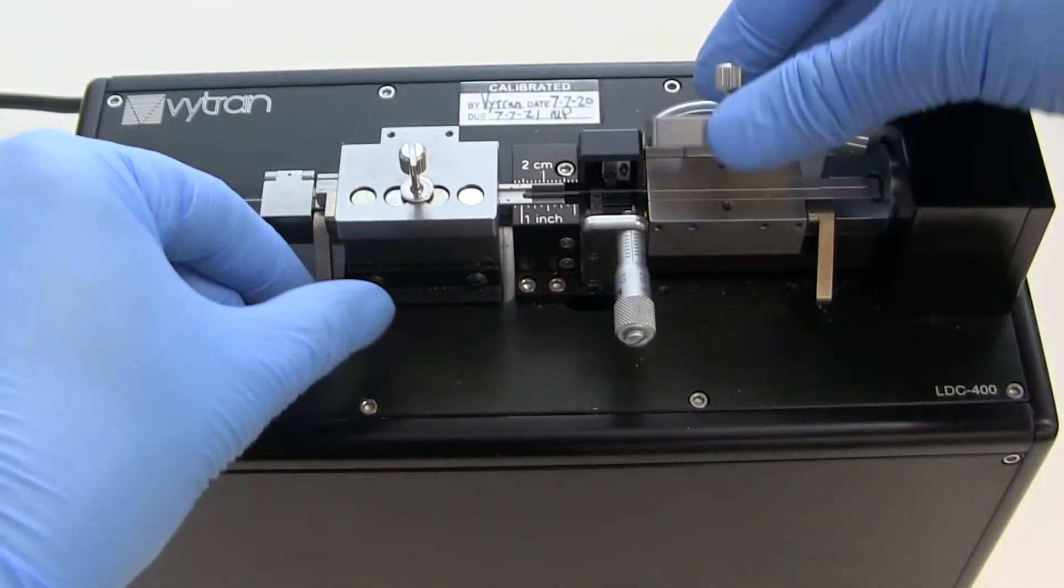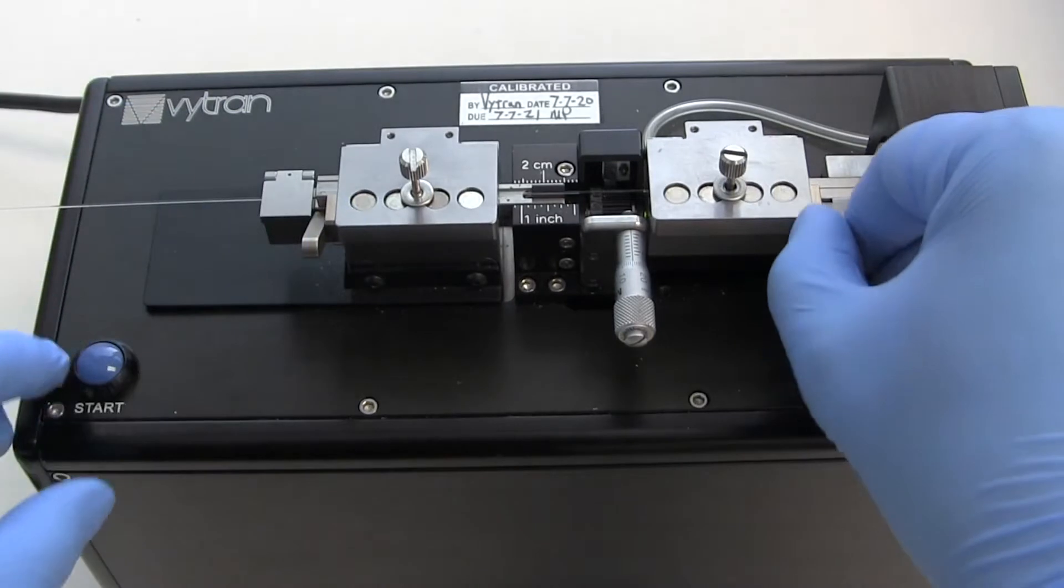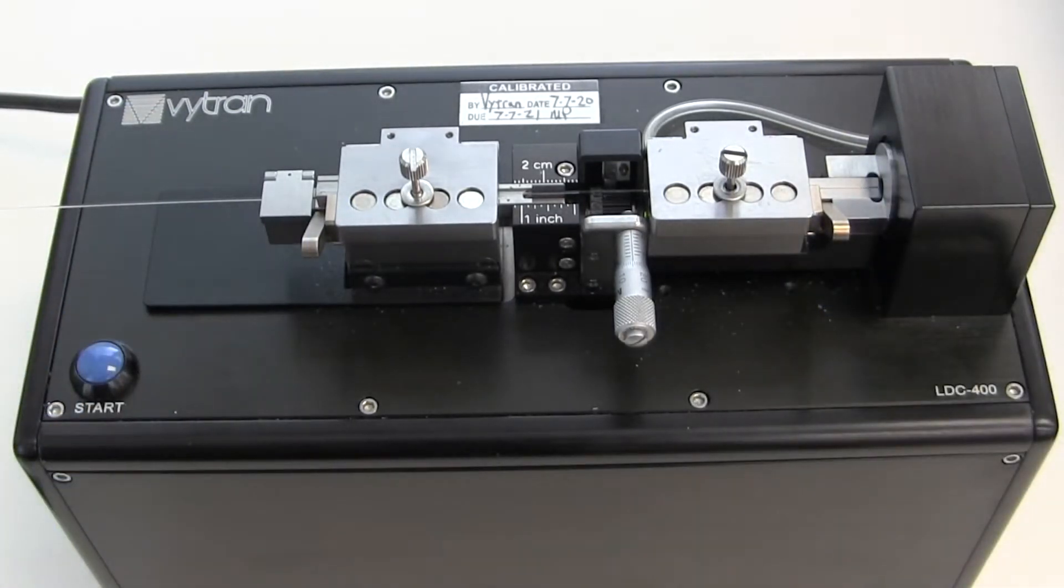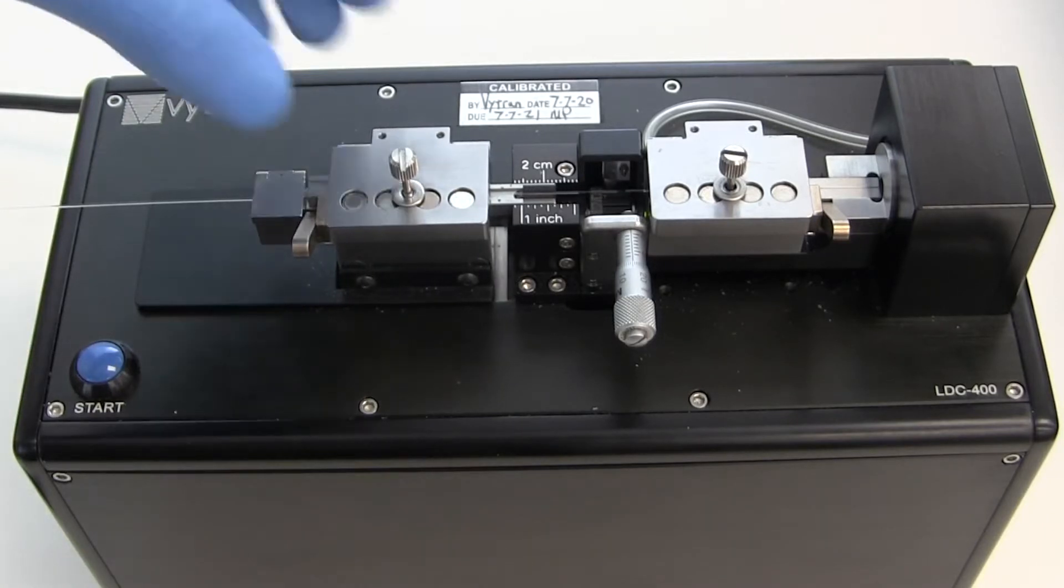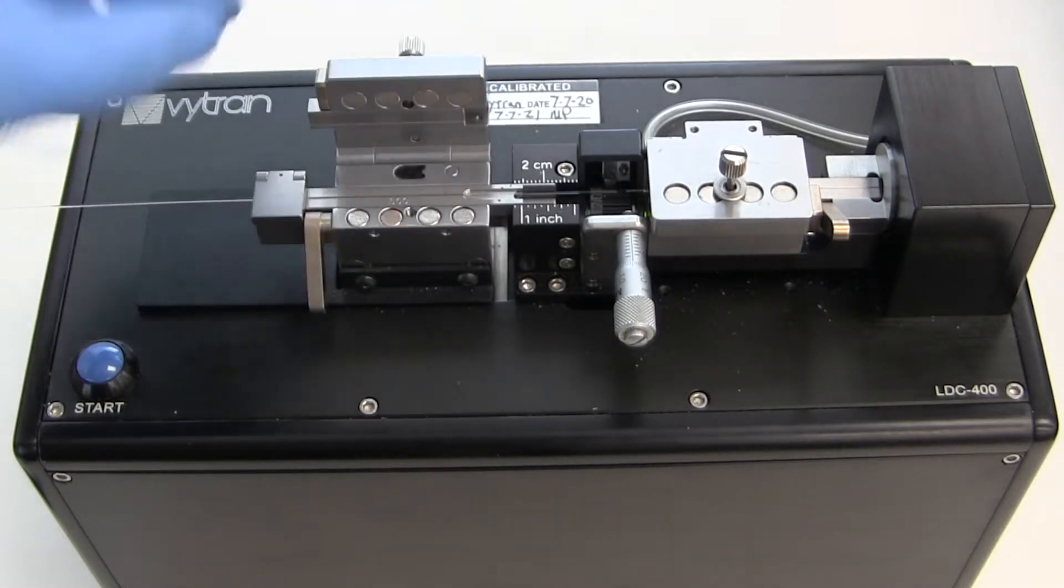In this video, we will demonstrate how LDC-401, LDC-401A, and LDC-450B cleavers use the tension and scribe technique to produce flat cleaved fibers with plus minus 0.5 degree tolerance.